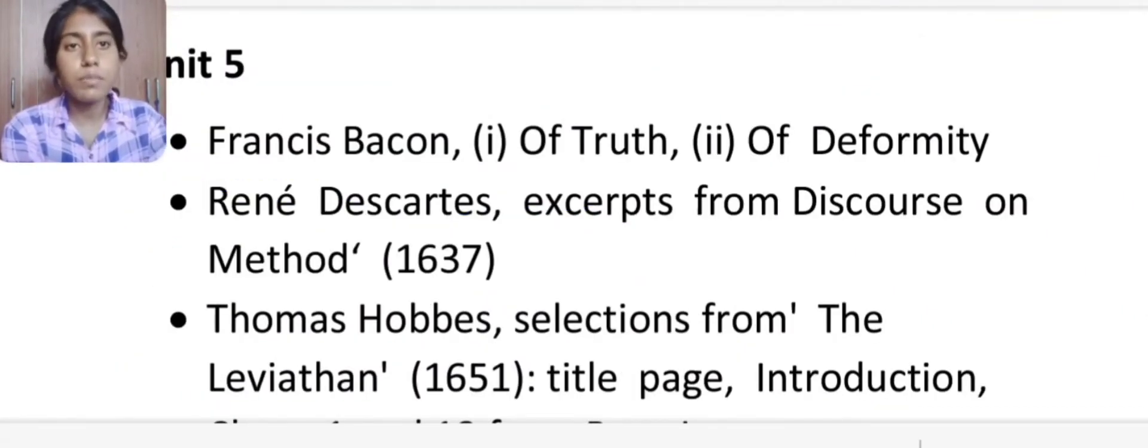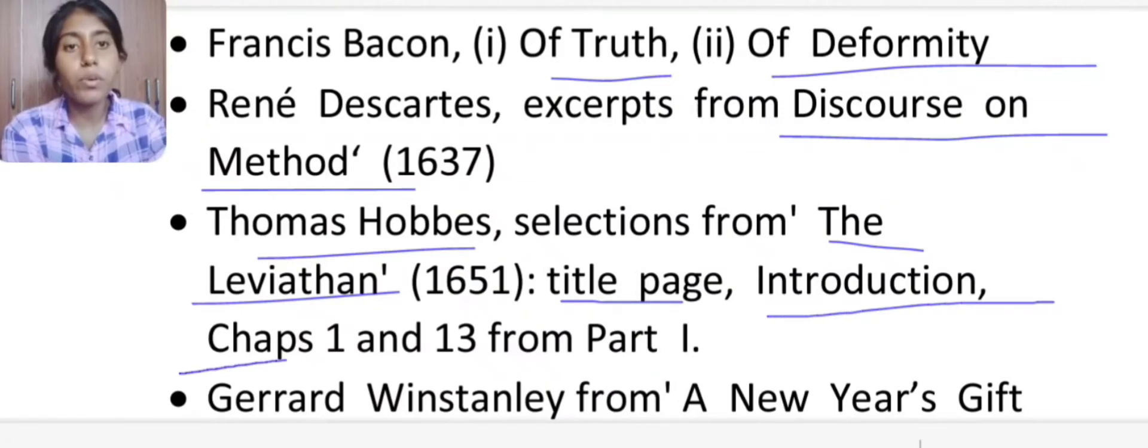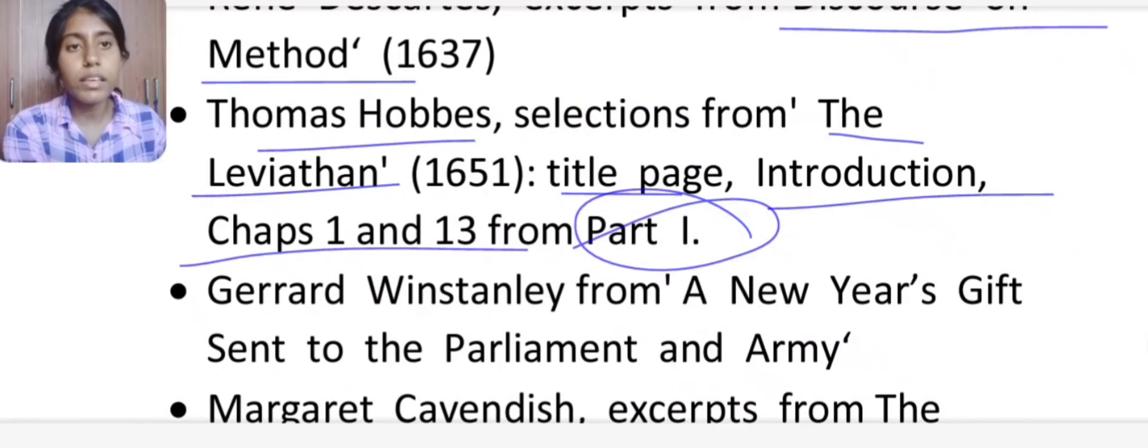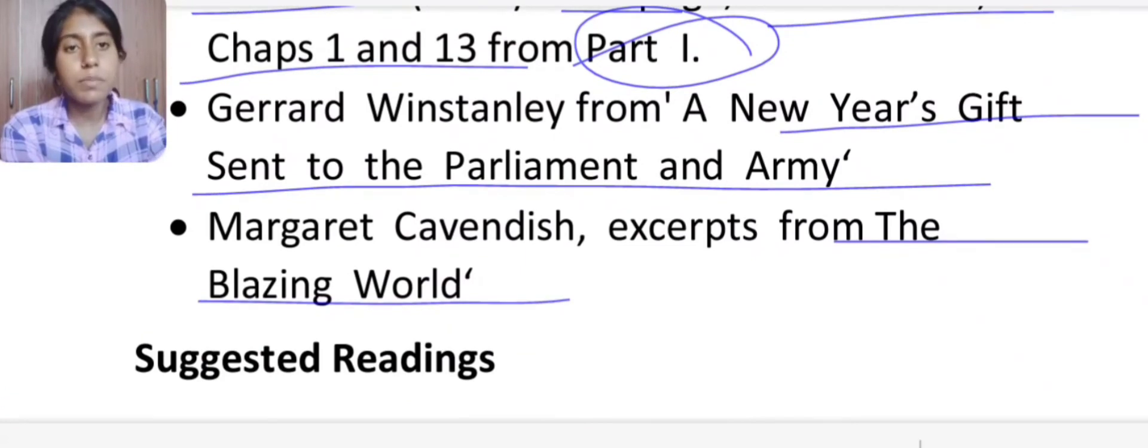Unit 5, you have to read Francis Bacon's Of Truth and Of Deformity, then René Descartes' Discourses on Method, then Thomas Hobbes' The Leviathan. You have to read the title page, introduction, Chapter 1 and 13 from Part 1. Then Gerrard Winstanley's A New Year's Gift Sent to the Parliament and Army, then Margaret Cavendish's The Blazing World. And similarly, you have to read some suggested topics, suggested readings.